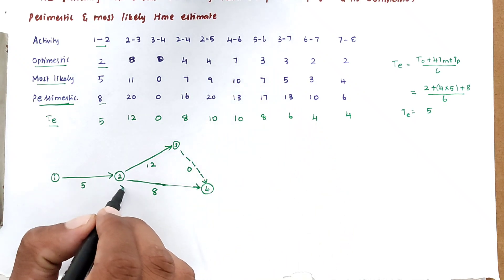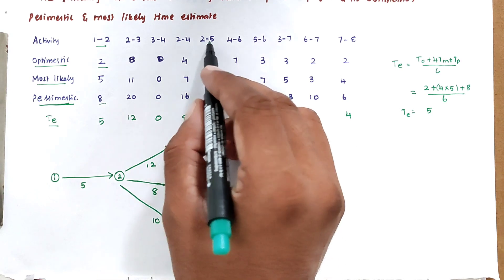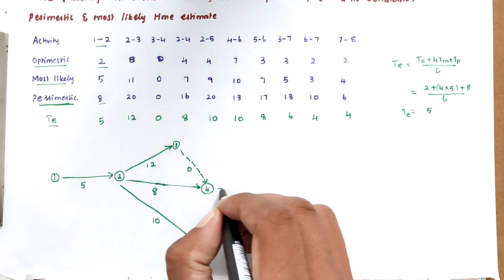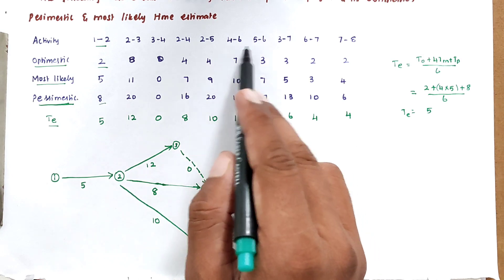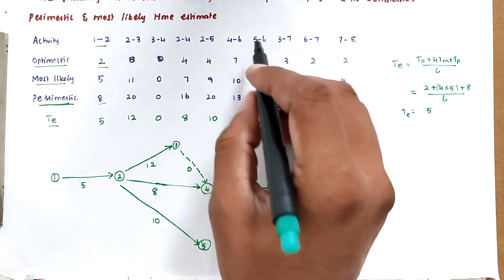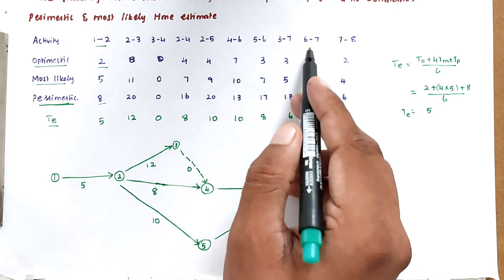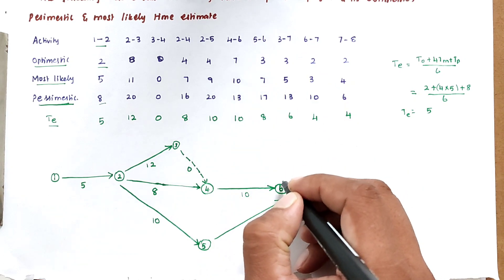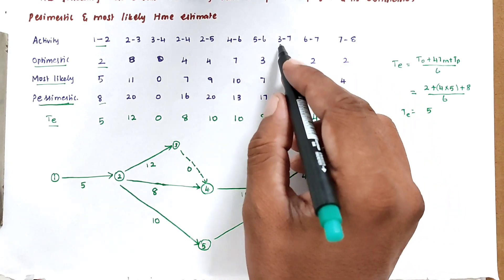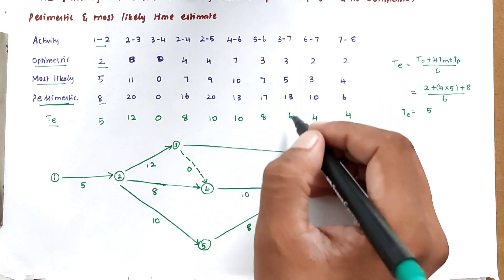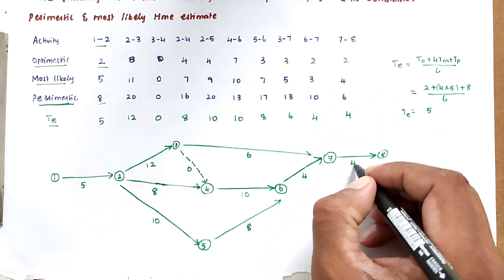Activity 2-5 is drawn with duration 10. Activity 4-6 is drawn with duration 8. Activity 6-7 is drawn next, followed by activity 3-7 with duration 6. Finally, activity 7-8 is drawn with duration 4.